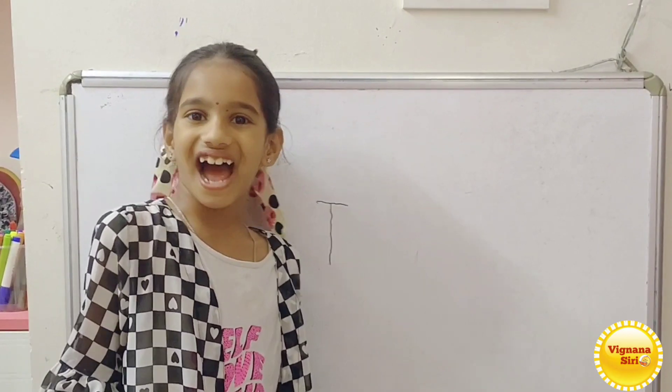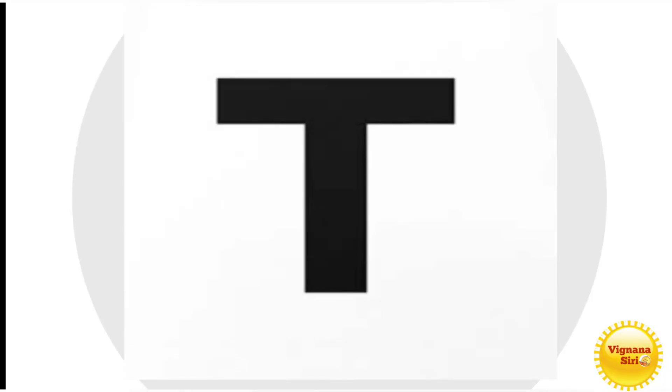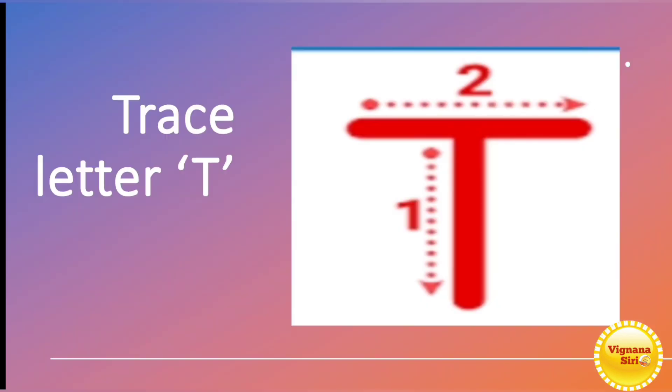It's so simple, right? Hi kids, so today we are learning the capital letter T. It's very simple. So first, you have to write the standing line and above that, you have to write a sleeping line. That is the capital letter T.